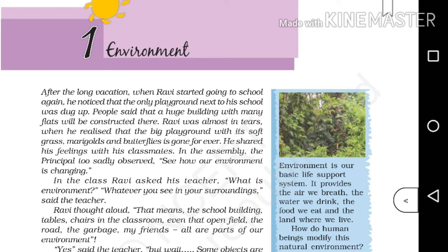Welcome to Class 7 Social Science — Geography. The first chapter is Environment. After a long vacation, when Ravi started going to school again, he noticed that the only playground next to his school was dug up. People said a huge building would be constructed there. Ravi was almost in tears when he realized that the big playground with its soft grass, marigolds, and butterflies was gone forever.